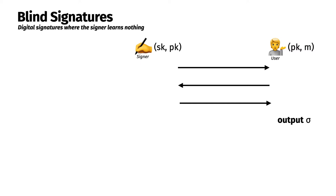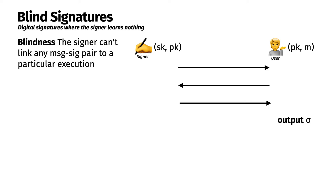The security property is formalized as blindness and essentially means that a signer who blindly signed two messages can't tell what order they were signed in, even if given the full transcript, message contents, and signatures later on.